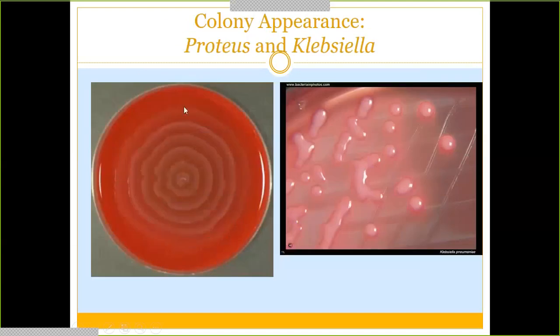Proteus has that unique swarming/wave-like appearance — nothing else does this except Proteus, so you can identify it right away. The problem is it can take over the whole plate, potentially covering up other organisms that might also be present. Also notable: while bacteria in general have a smell, Proteus has a very distinctive odor that stands out, so you might smell it before you even see it.